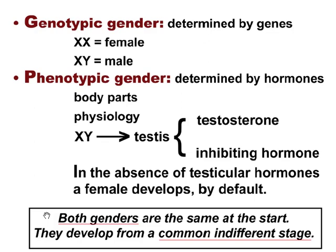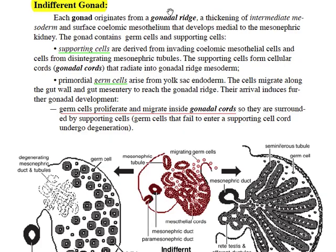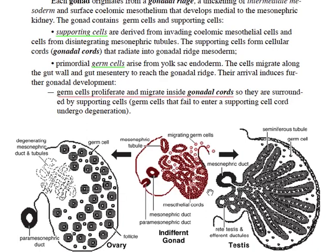Genital anomalies commonly involve some degree of intersex appearance. Intermediate mesoderm of the gonadal ridge initially becomes an indifferent gonad that features supporting cells and germ cells. Supporting cells form gonadal cords. The supporting cells come from surface mesothelium and also from disintegrating mesonephric tubules. Germ cells originate in yolk sac endoderm and must migrate to the gonadal ridge. Germ cells depend on the supporting cells for their survival and degenerate unless they are surrounded by supporting cells.